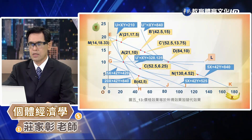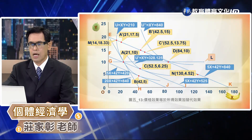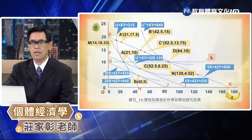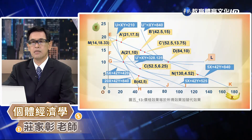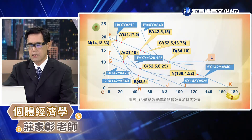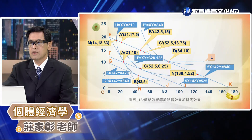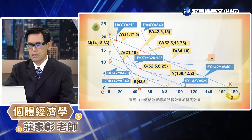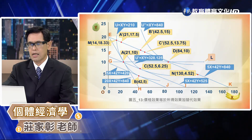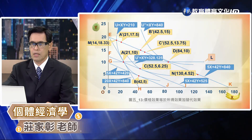圖5-13的好處在於它可以讓我們同時比較這兩種實質所得不變定義之下的替代效果跟所得效果。在5-13當中我們可以看到，史拉斯基所定義的替代效果是從 A 點21單位增加到52.5單位，所得效果是從52.5單位增加到84單位；那席克斯所定義的替代效果是從21單位增加到42單位，所得效果是從42單位增加到84單位。雖然他們所定義的價格效果是一樣的，但是他們所切割出來的替代效果和所得效果並不相同。